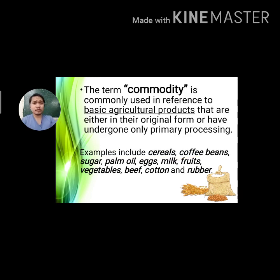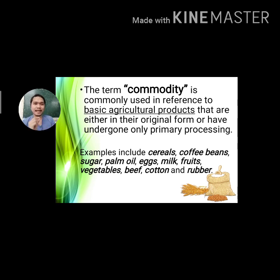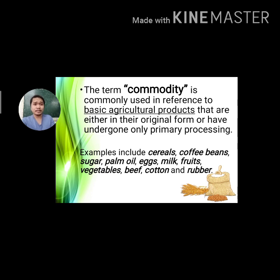What is a commodity? The term commodity is commonly used in reference to basic agricultural products that are either in their original form or have undergone only primary processing. Examples of commodities include cereals, coffee beans, sugar, palm oil, eggs, milk, fruits, vegetables, beef, cotton, and rubber.